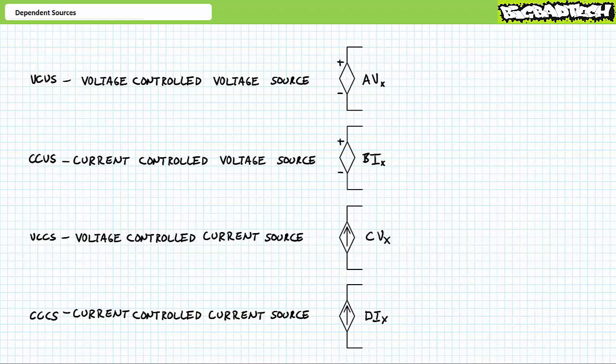For the purposes of this lecture, we're assuming all dependent sources produce output times some constant, although other more complicated mathematical relationships might exist. The reason for this assumption is that a transistor can sometimes be modeled as a dependent source where output is proportional to some controlling signal — either voltage or current — times some gain factor. You'd think this gain would be constant and perfectly linear, but it isn't. In the upper and lower regions you might notice nonlinearities, but inside the typical operational range it's a simple matter of multiplying the controlling signal times some constant.